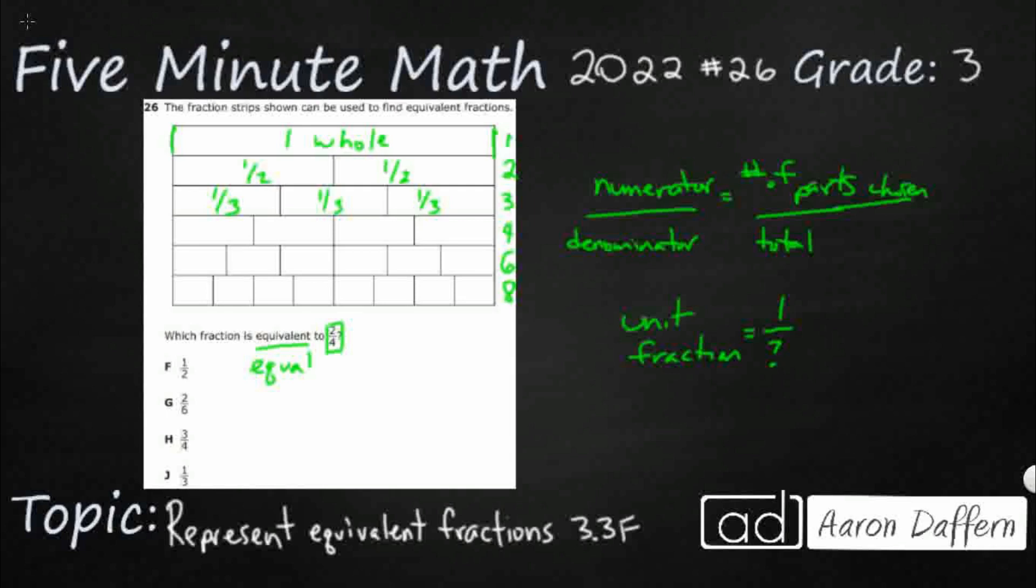Then I'm going to get my fourths, which that's what I'm looking for. I've got one fourth, one fourth, one fourth, and one fourth. And if I want to finish it out, I've got my sixths. So I'm going to use my unit fractions. This is how we properly label these fraction strips.